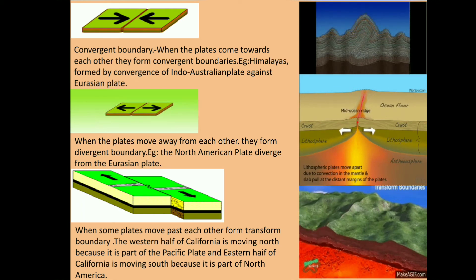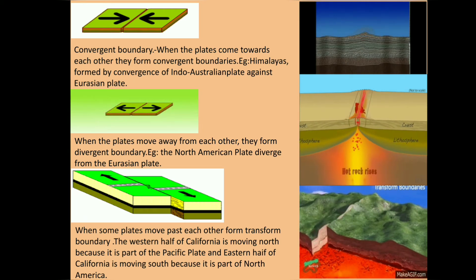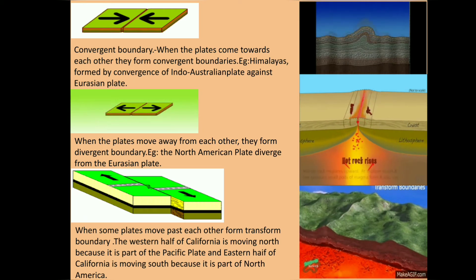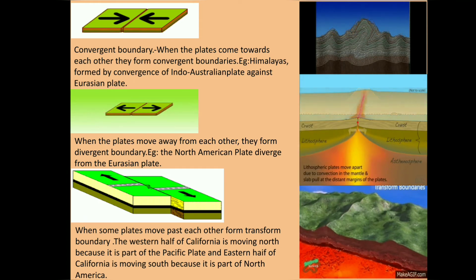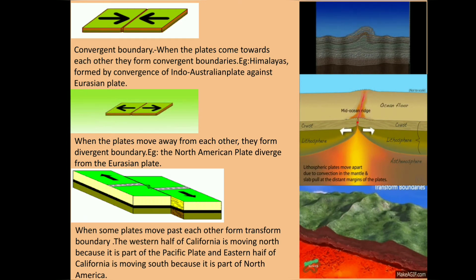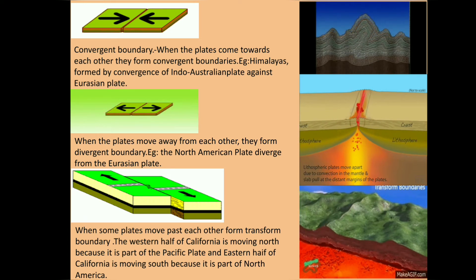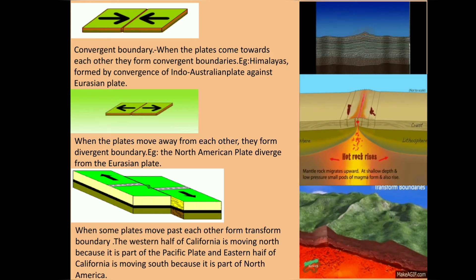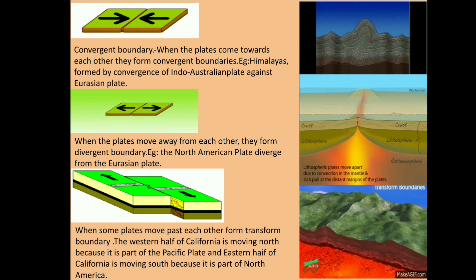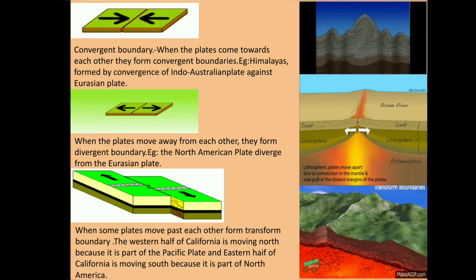As discussed earlier, Earth's crust is divided into seven major and some minor plates. These plates are continuously floating on magma, leading to folding, faulting and volcanic activities. Due to the movement of these plates, various changes occur, resulting in the formation and evolution of the present landform features of India.